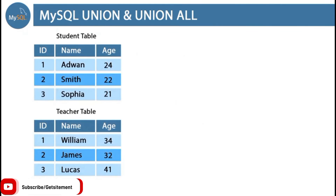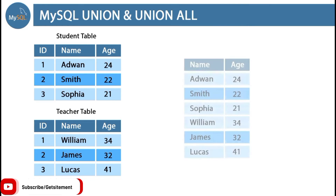Here you can see we have two tables: the student table and the teachers table. Suppose we are working with a school database and inside the database we have two tables, student and teacher. In the student table we have three columns: id, name, and age. Similarly, in the teachers table we have three columns: id, name, and age. I want to extract a result using the SELECT command which returns a combined result from both tables.